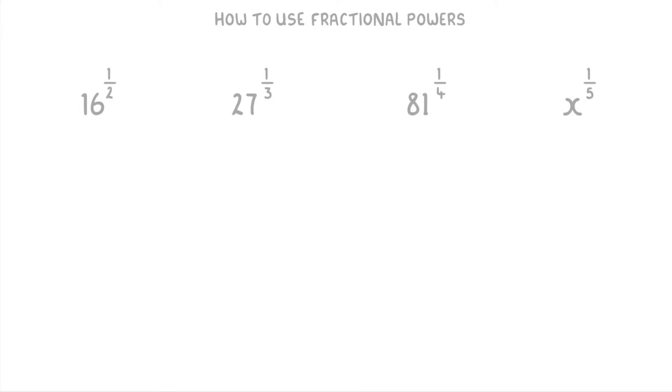For 16 to the power of one-half, we'd have the square root of 16, which is 4. For 27 to the power of one-third, we'd have the third root of 27, which is 3. And 81 to the power of one-quarter would be the fourth root of 81, which is also 3.